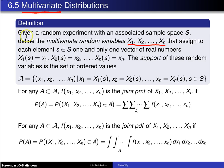So here is the definition. Given a random experiment, we start out with a random experiment which is what we started with way back in Chapter 2, and that random experiment has an associated sample space S.